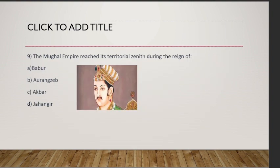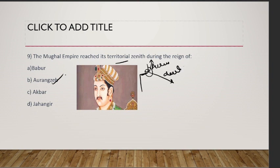The Mughal Empire reached its territorial zenith during the reign of Aurangzeb — it reached its peak at that time. After that, the empire became economically backward, and the many taxes that Aurangzeb imposed also backfired. Once something reaches its peak, the decline begins — so the decline started during his rule.